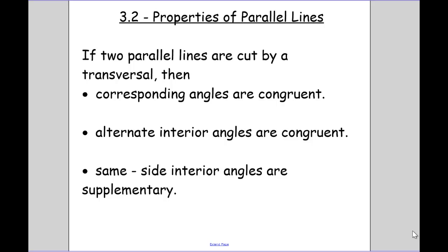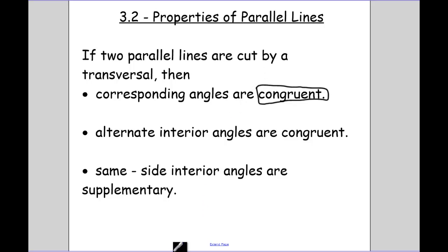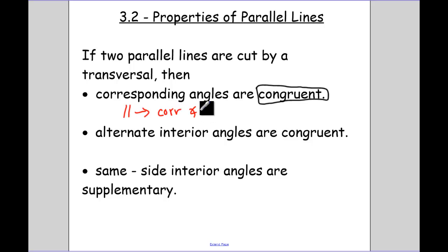Today we're going to be talking about some properties of parallel lines. If two parallel lines are cut by a transversal, the first property is a postulate: corresponding angles are congruent. The abbreviation for that is parallel lines gives us — indicated by a little arrow — corresponding angles congruent. You should have discovered that during section 3.1.